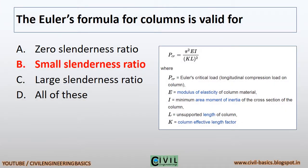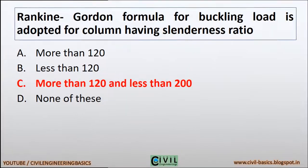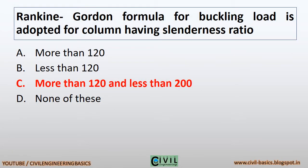Euler's formula for columns is valid for small slenderness ratio. You can see the Euler's formula for critical load. The Rankin-Gordon formula for buckling load is adopted for columns having slenderness ratio more than 120 and less than 200. The slenderness ratio of a compression member is the ratio of effective length of the compression member to the radius of gyration of that member.